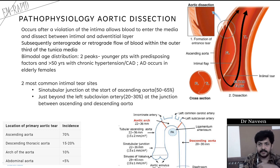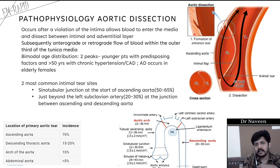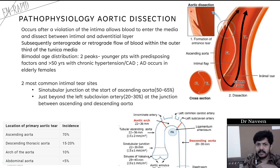Moving on to the pathophysiology of aortic dissection. What you are seeing is the longitudinal section of the aorta — a magnified view. There is a violation of the tunica intima, and that allows blood to enter the space between the aortic wall layers. This blood will keep dissecting between the intima and the adventitial layer.